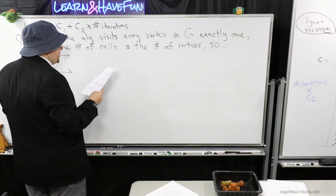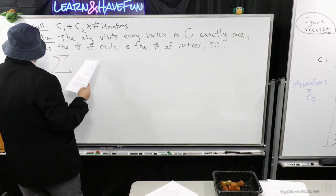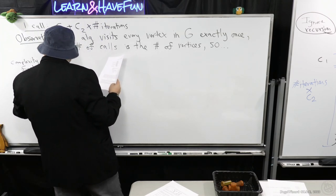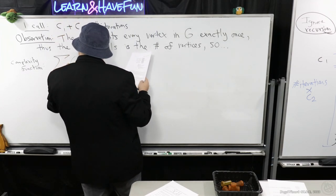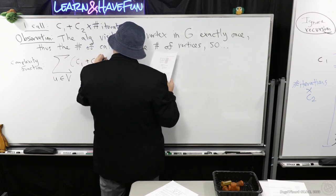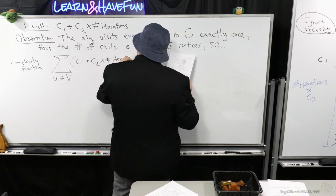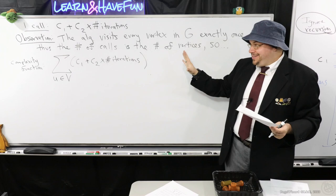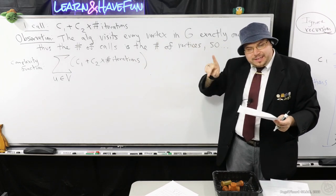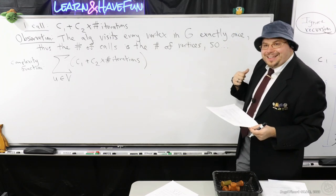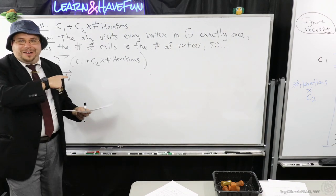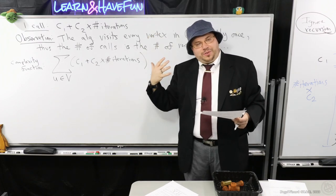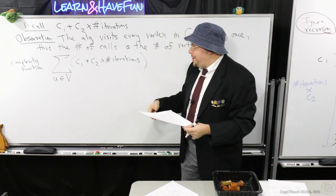So our complexity function looks like this: for each vertex in the graph, you perform C1 plus C2 times the number of iterations. Now, you might ask why not just write it as N times this — and you'll see that in one representation that's exactly right, but in the other it's actually more helpful to write it like this. There are two ways to represent the graph I've talked about: the adjacency matrix and the adjacency list.